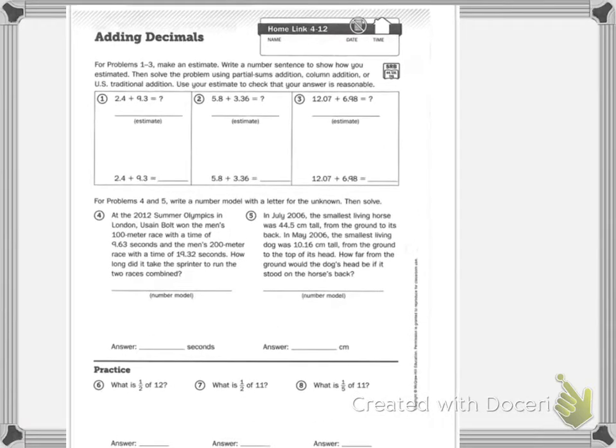It says for problems 1 through 3, make an estimate and write a number sentence to show how you estimated. Then solve the problem using partial sums addition, column addition, or U.S. traditional. Use your estimate to check your answer.